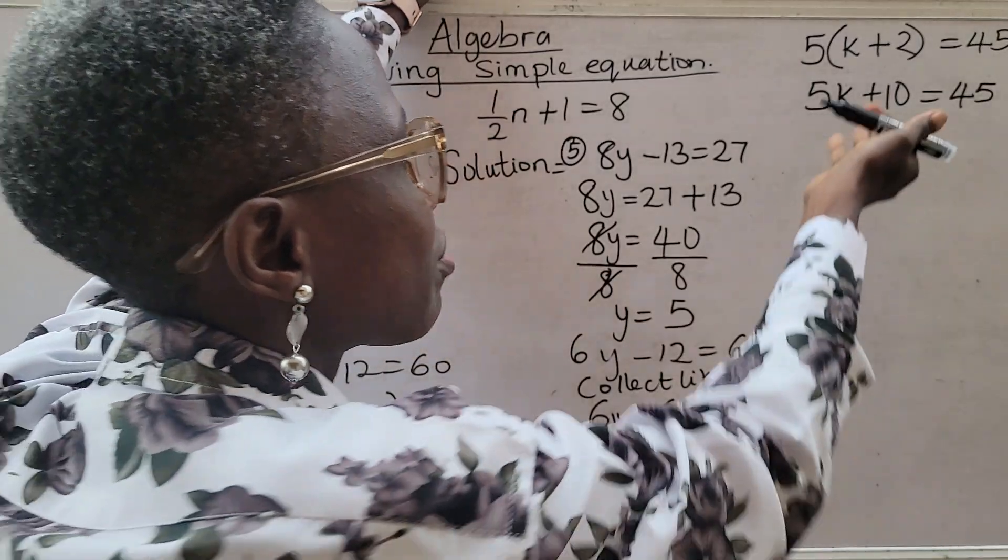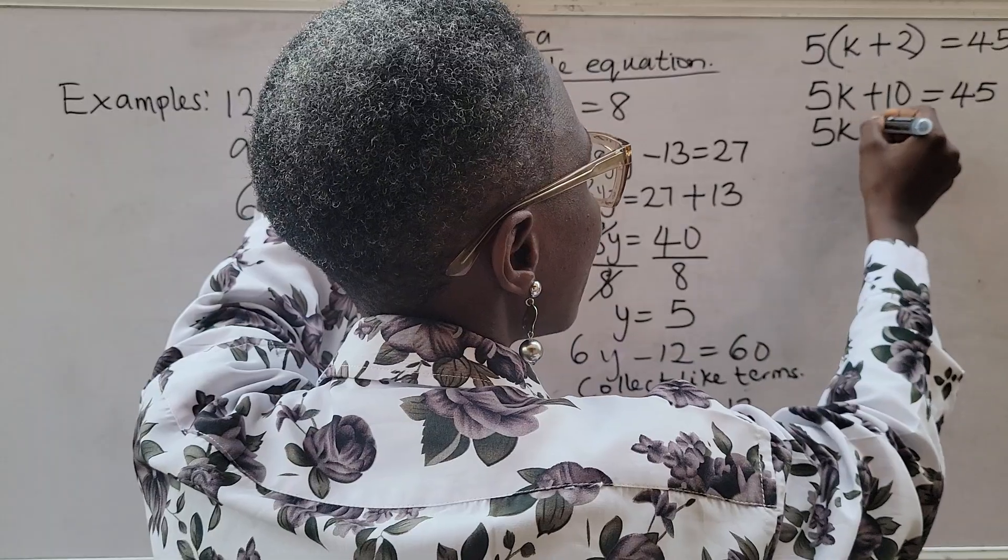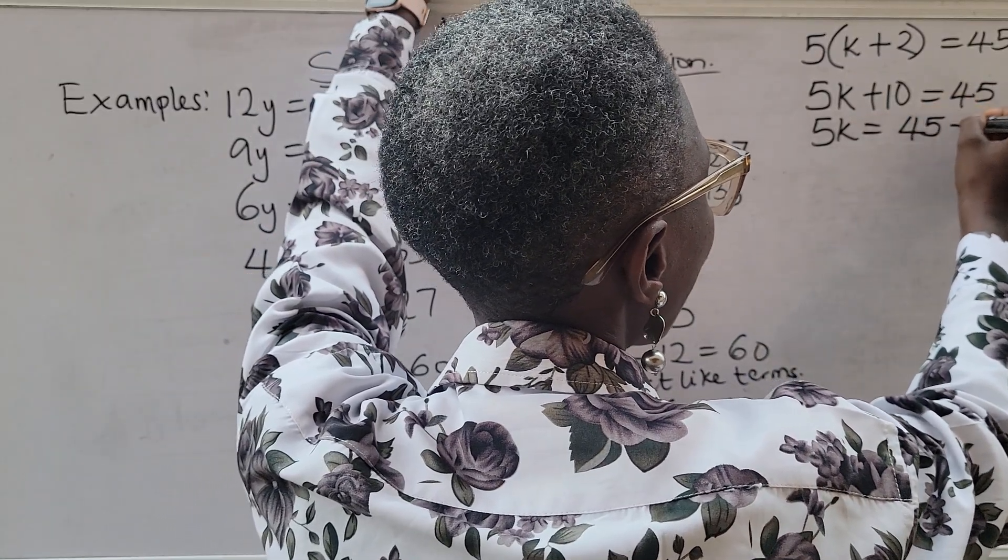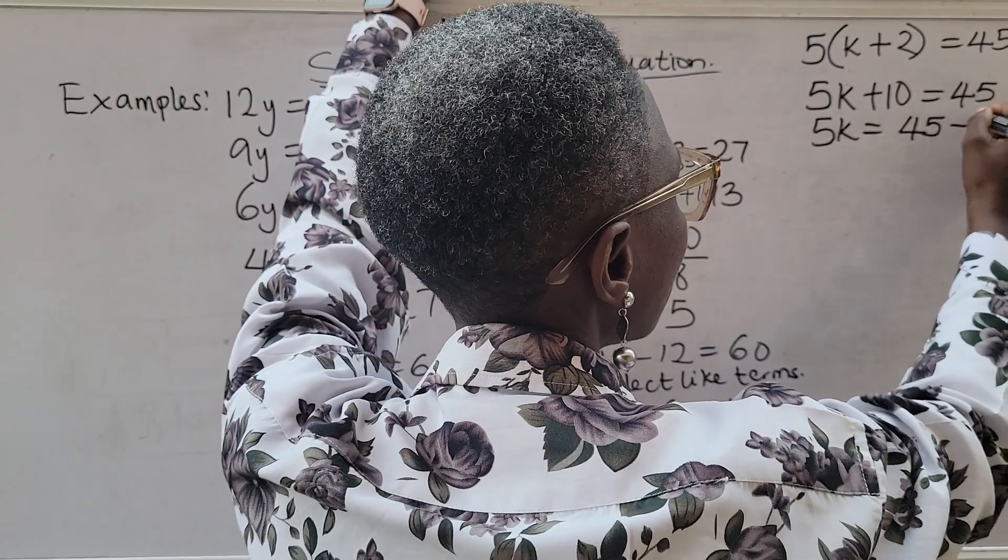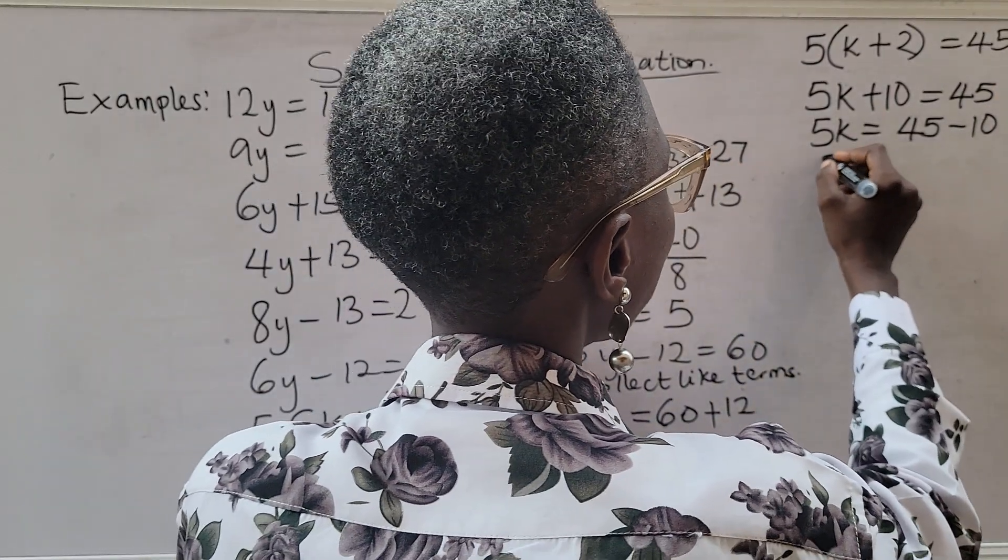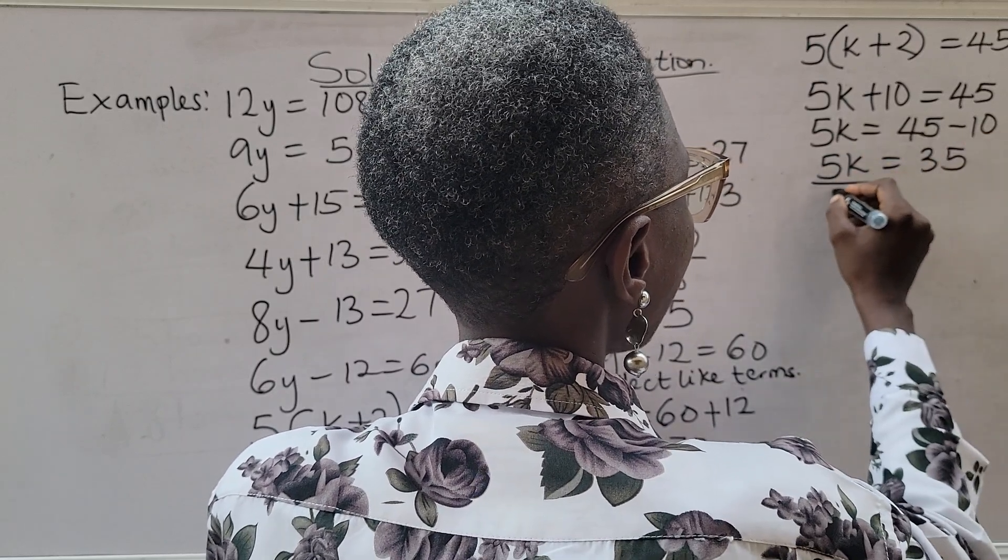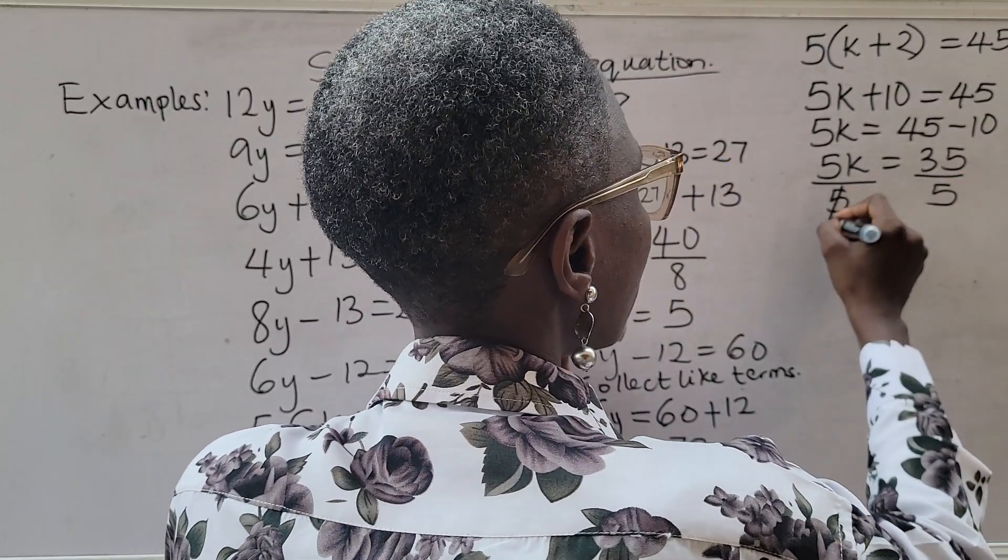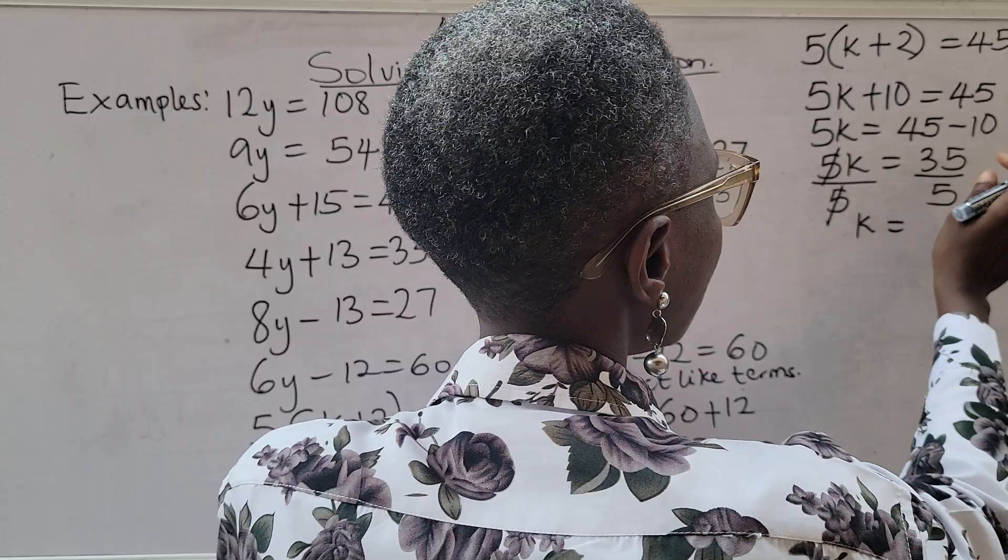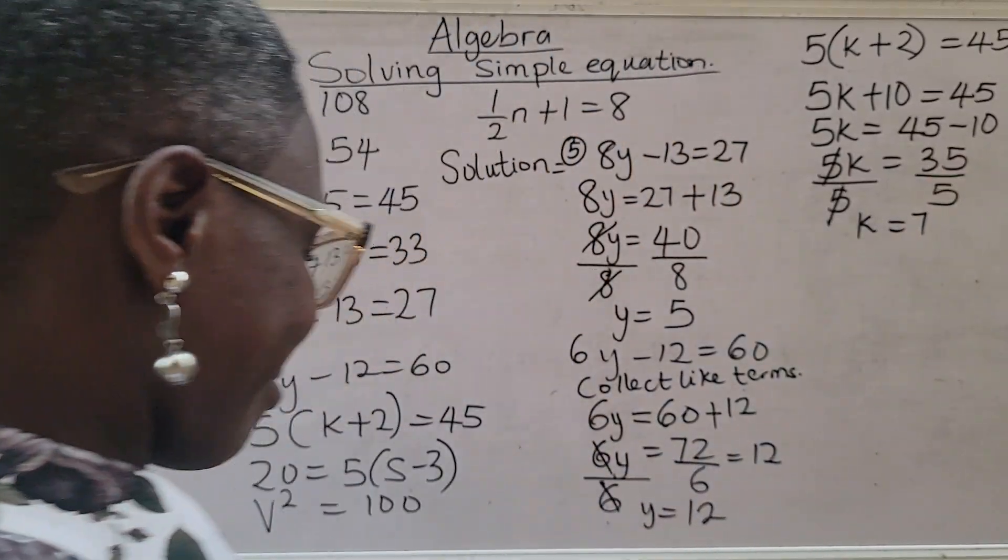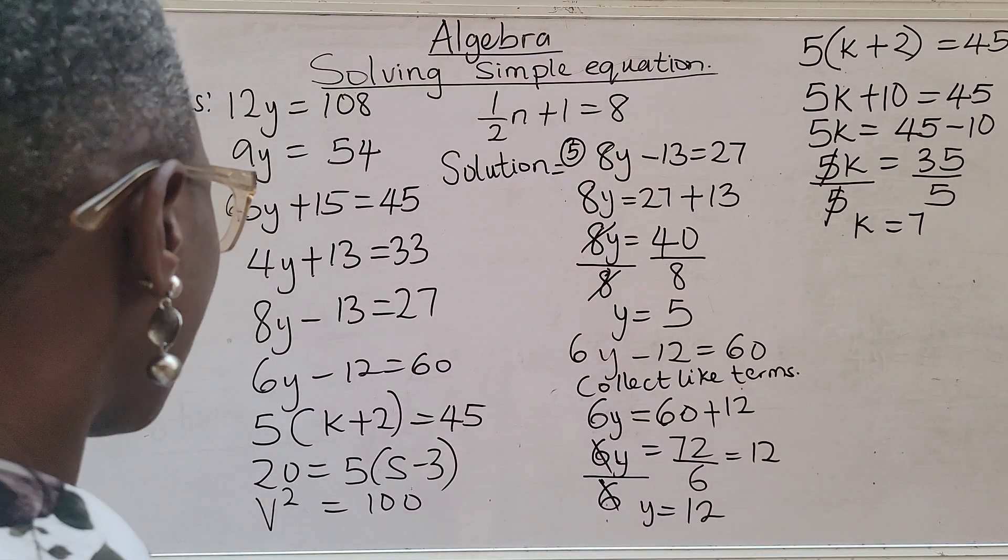We are looking for k. The moment we get here, we are back to what it used to be here. So we can say 5k equals 45 minus - you remember when it's crossing over, it is going to turn to minus. Minus 10. So we can say 5k equals 35. Divide both sides by the coefficient of k. This is canceling this. k equals 35 divided by 5. That is 7. I hope that's simple enough and clear.